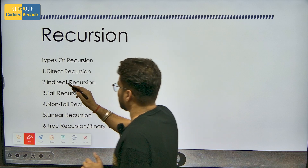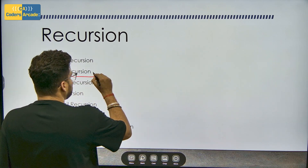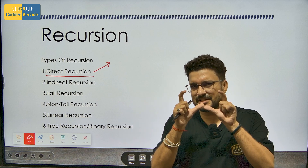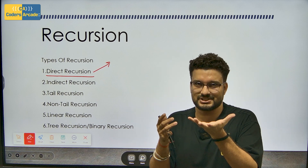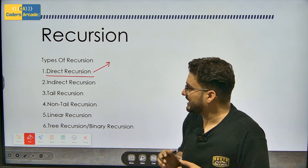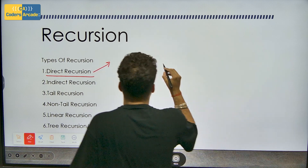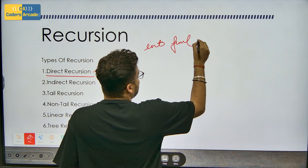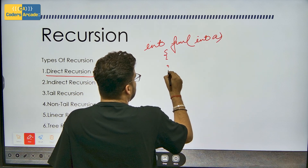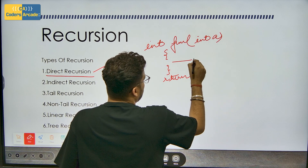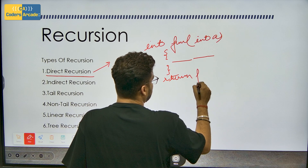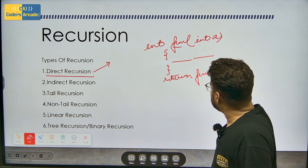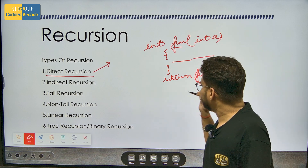The very first type is direct recursion. Recursion means a function which calls itself — it's the breaking down of code into simpler parts, into chunks, making our code simpler. Direct recursion means if I make a function — say a function with return type int, with some parameters — and in that function I am just returning that same function itself. If you are directly returning that function, that is known as direct recursion.